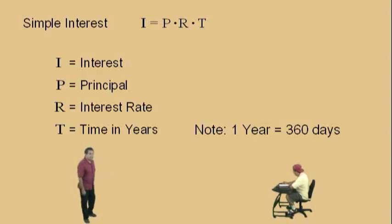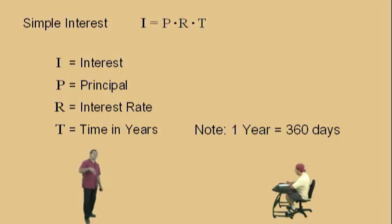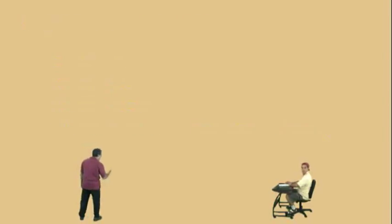We all know that in a year there's 365 days — or actually 365 and a quarter days. That's why every fourth year we have a leap year day. Anyway, let's get to work, Charlie.